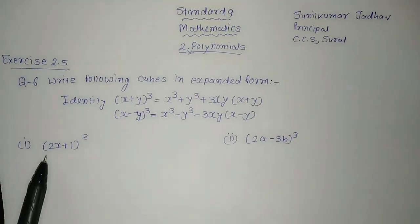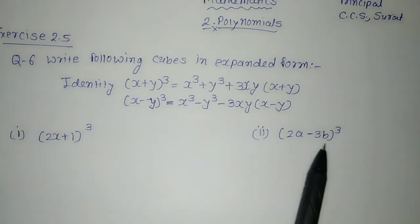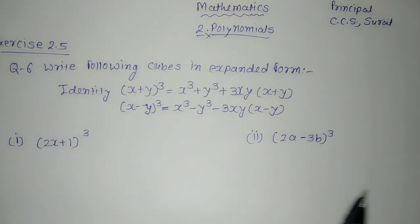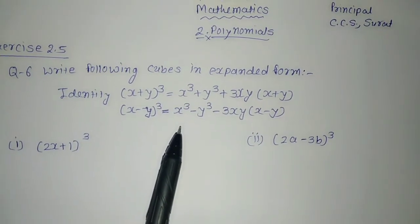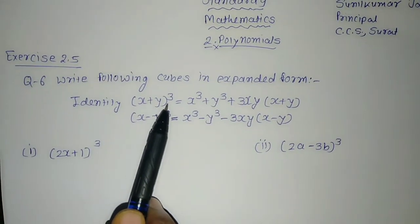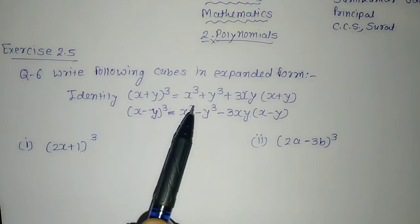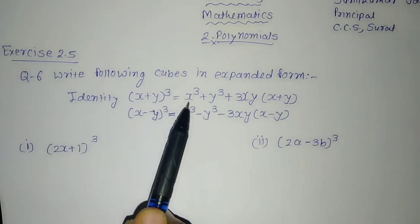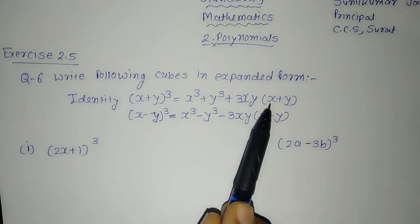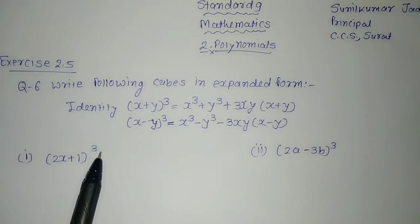The cubes given are (2x + 1) whole cube and (2a − 3b) whole cube. Here we have to use the given identities. Since (2x + 1) is like x plus y whole cube, we will use the identity: x plus y whole cube is equal to x cube plus y cube plus 3 times x times y times bracket x plus y, because here it is a plus sign with the cube.